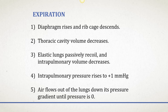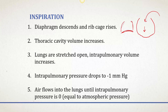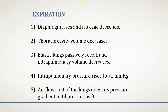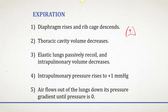During expiration — which is a passive process — the muscles that contract for inspiration are the external intercostals and the diaphragm. But during expiration those muscles simply relax. The diaphragm rises as it relaxes, and the ribcage descends. Thoracic cavity volume decreases, the lungs passively recoil, and intrapulmonary volume decreases. With decreased volume, pressure increases, so intrapulmonary pressure rises and air flows out of the lungs down its pressure gradient until the pressure equals zero.